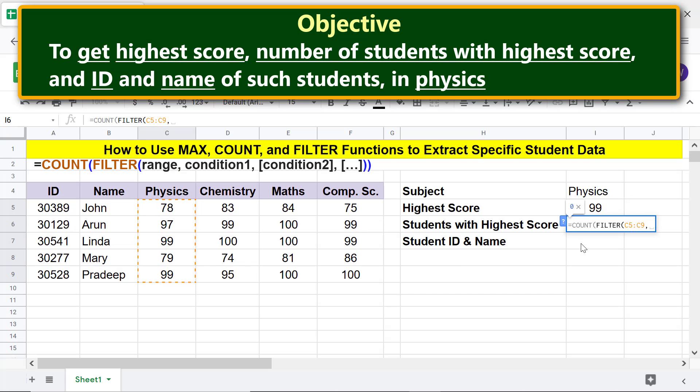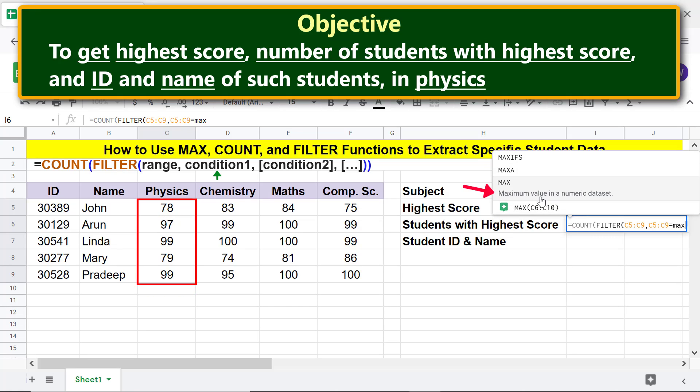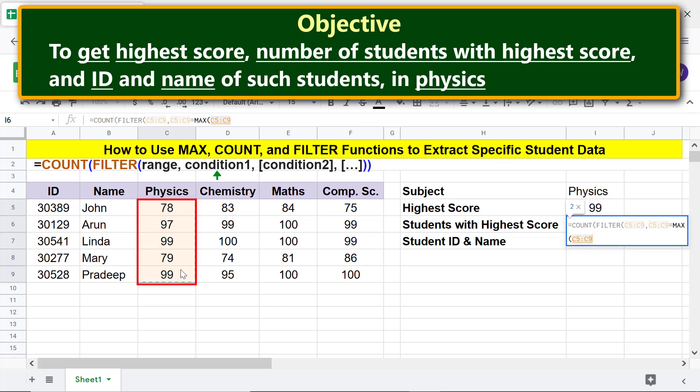Type comma. For condition 1, select this range again. Type equals MAX, select MAX, and select this range one more time. What this condition is telling is extract only the highest score. Type the closing parentheses, press Enter.